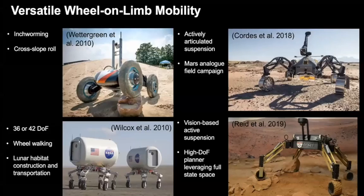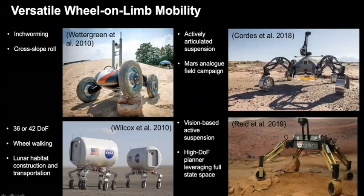Previous work on problems similar to this, and more specifically on wheel-on-limb mobility, includes David Wettergreen's work at CMU with the Scarab rover, which demonstrated the effectiveness of push rolling or inchworming. There's also the ATHLETE rover at JPL, our colleagues at DFKI who developed the Sherpa TT rover seen briefly yesterday, and my PhD work focused on a rover called Mammoth, where we demonstrated autonomous navigation and planning with versatile wheel-on-limb platforms.